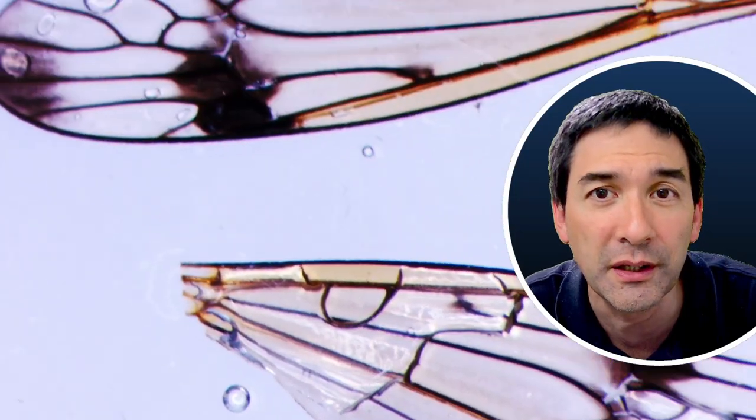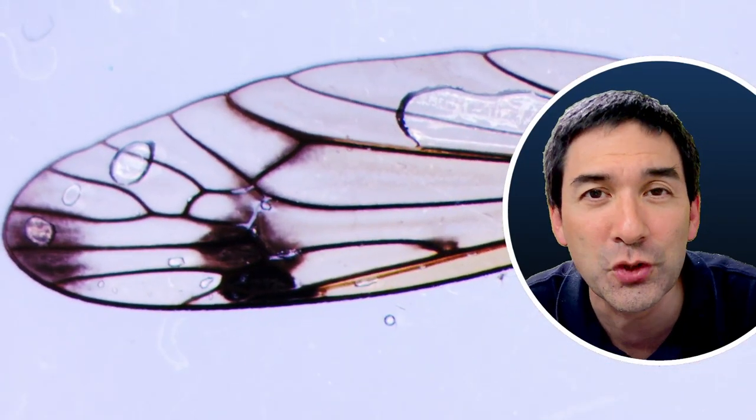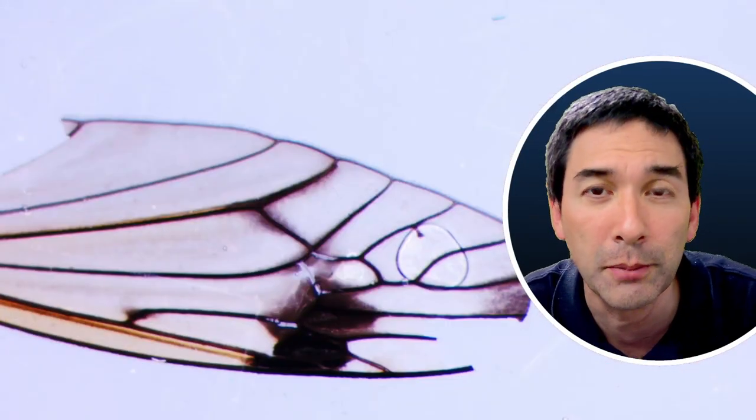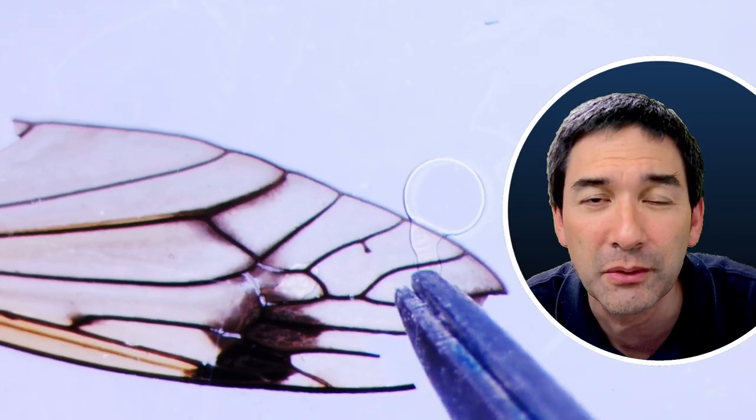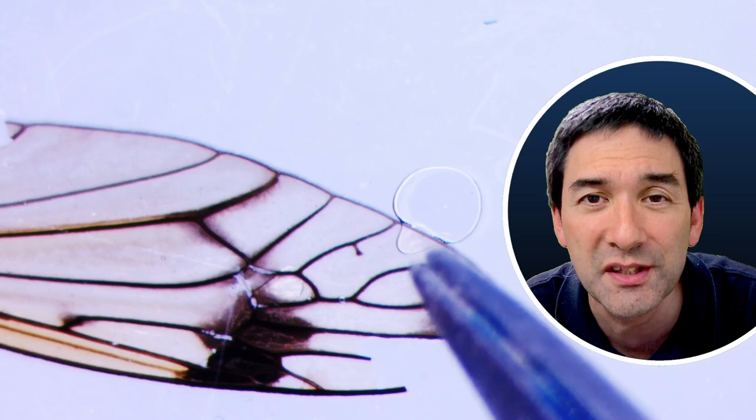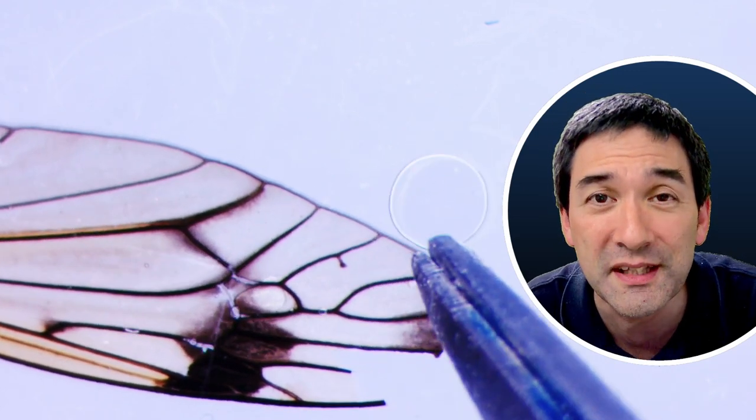Now I put it under my stereo microscope and I could see that there are quite a lot of bubbles, air bubbles, because beneath the wing or on top of it the air bubbles could not escape. So I carefully used my tweezers to press against the cover glass.